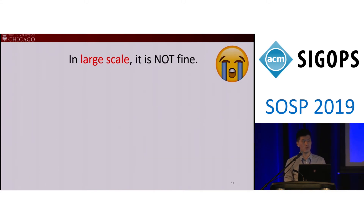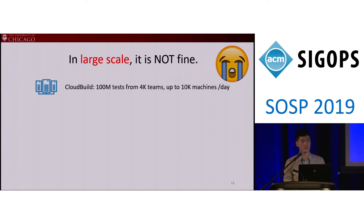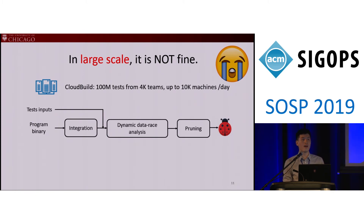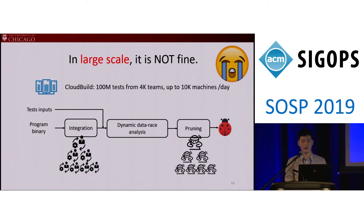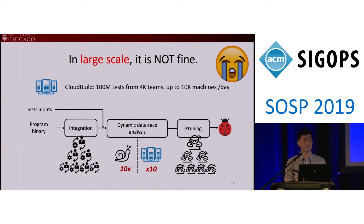Existing techniques do not work at large scale. For example, at Microsoft, their testing framework Cloud Build processes millions of unit tests from 4,000 teams per day, using up to 10,000 machines to finish testing on time. Existing static tools cannot scale for the large codebase. Existing dynamic tools would require huge effort to integrate with thousands of development teams using different kinds of synchronization. Manually analyzing the huge number of bug reports also costs a lot, and tens of thousands of extra machines would be needed to run those tests, which is unacceptable.